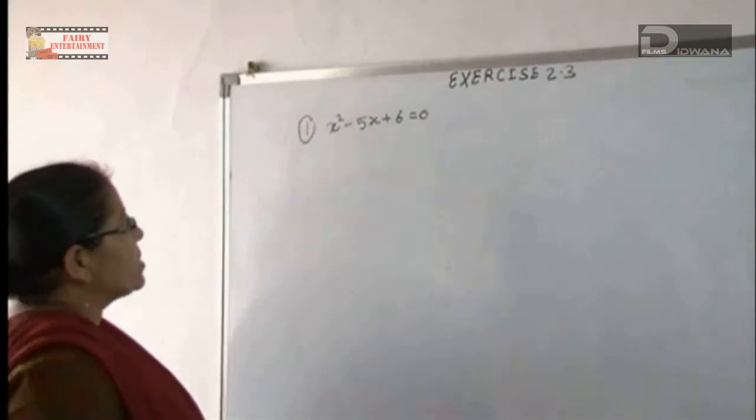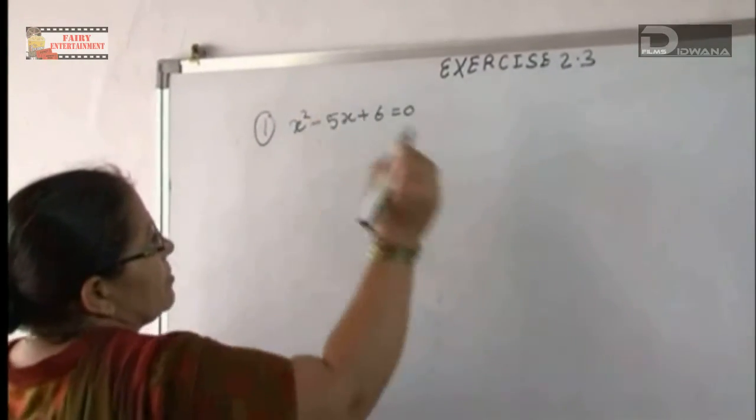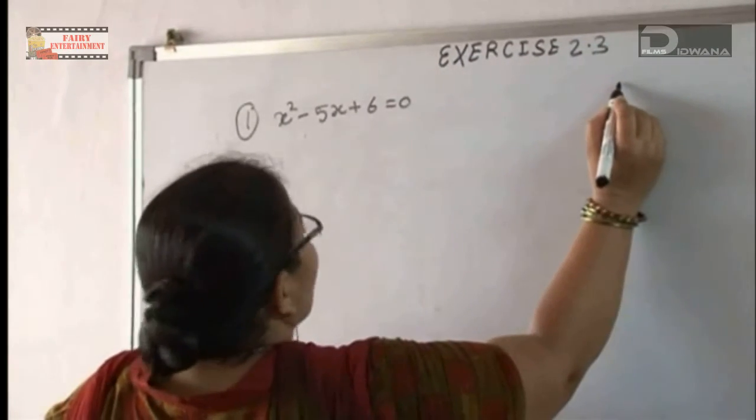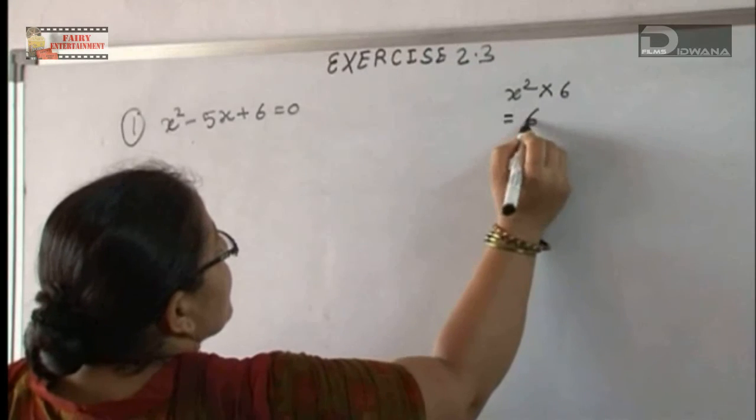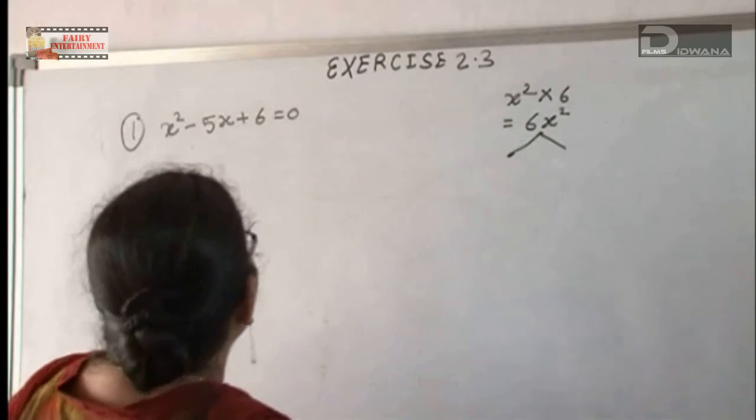We have to make the factor. First we multiply first and the third number. If we multiply first and the third number, first number is x square into 6. So we will get the answer 6x square.